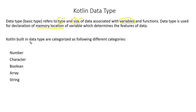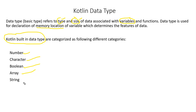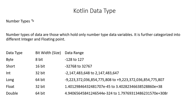The Kotlin built-in data types are categorized into the following different categories. Kotlin has some built-in data types that we can make use of: numbers, character, Boolean, arrays, and string. First of all, we'll go and learn about the numbers data type in Kotlin.